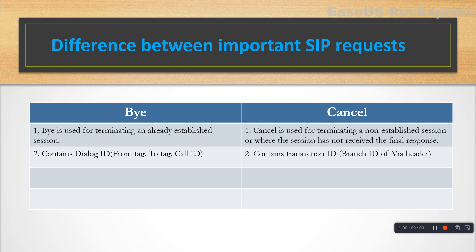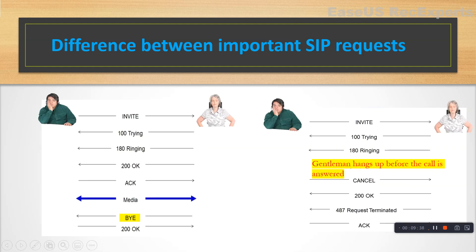CANCEL is used to terminate a non-established session where a final response has not been received. A missed call scenario — you give a missed call to someone and then disconnect — since the other party didn't get a chance to accept the call, a CANCEL will be sent. Now BYE contains the From tag, To tag, and Call-ID — these are called dialogue IDs. CANCEL contains the transaction ID, which is the branch ID in the Via header. So BYE is sent after media has been established, while CANCEL is sent when media has not been established yet.